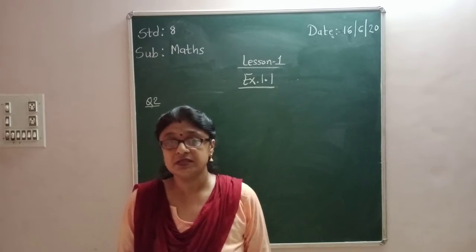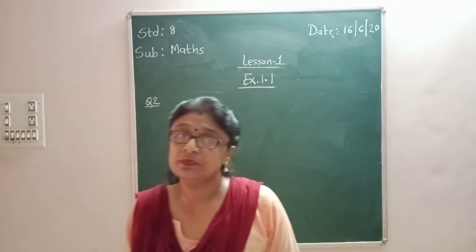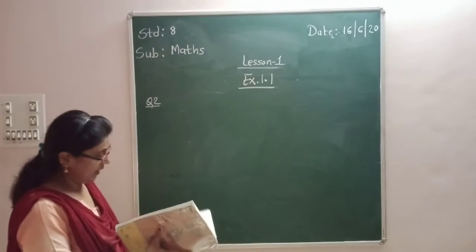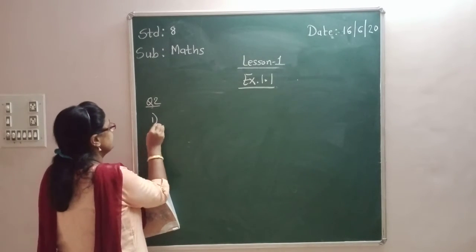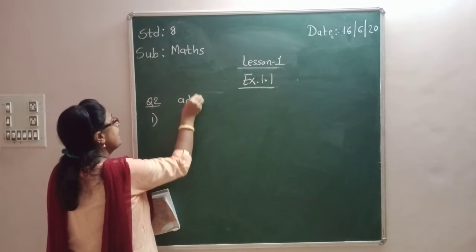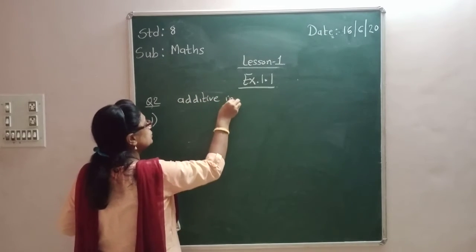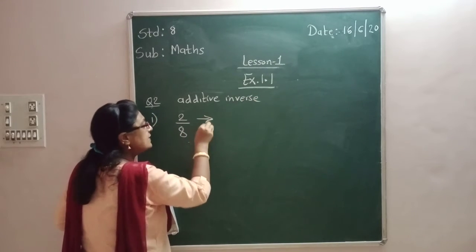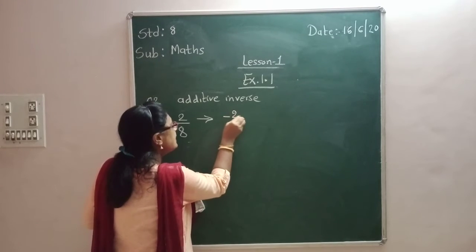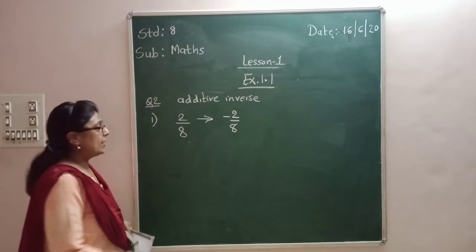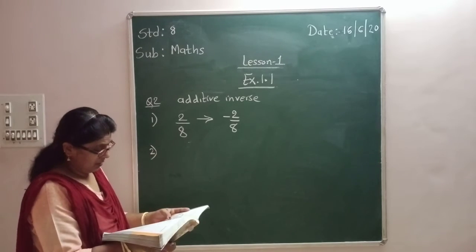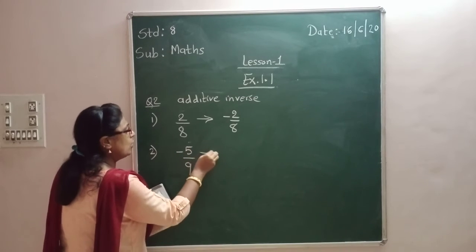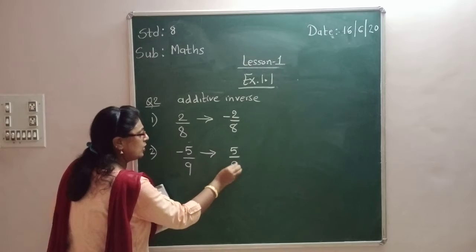Now additive inverse means: where the sum equals zero with the given number. Let us see the first one: 2/8. So the additive inverse of 2/8 is minus 2/8. The second one is minus 5/9 — so the additive inverse of minus 5/9 is plus 5/9.